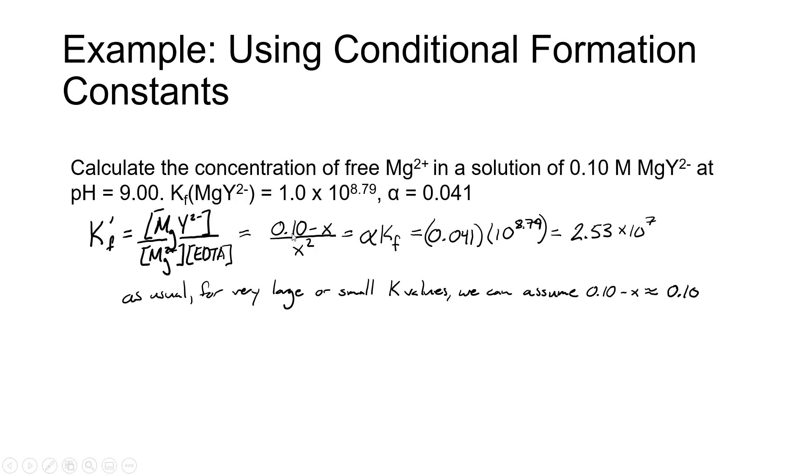We're going to solve this expression, 0.1 minus X divided by X squared equals 2.53 times 10 to the 7th to get our free magnesium concentration.